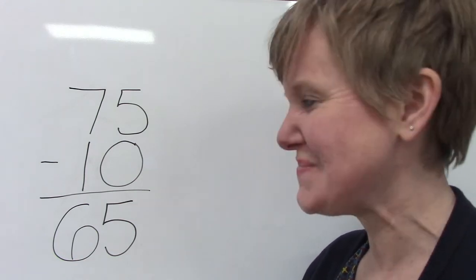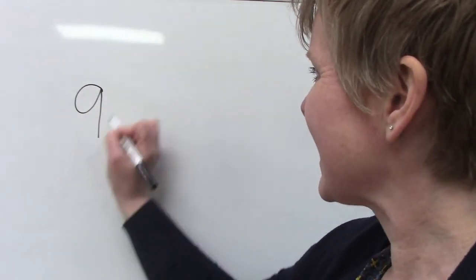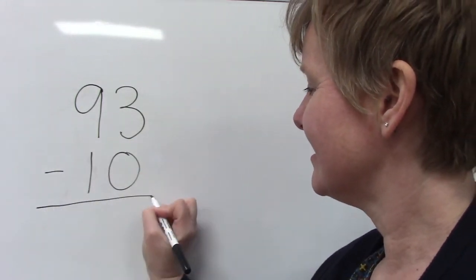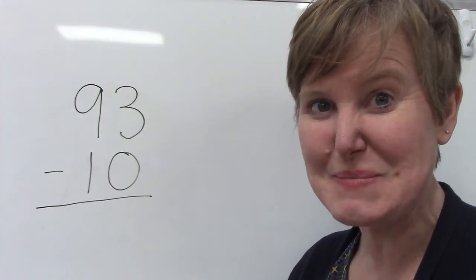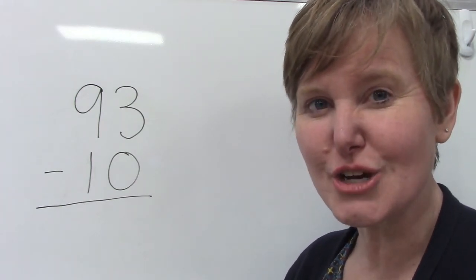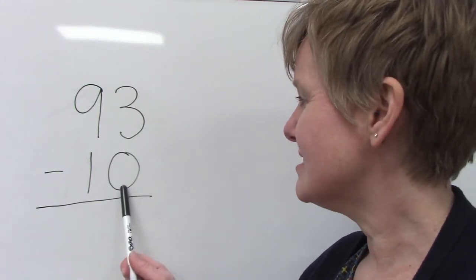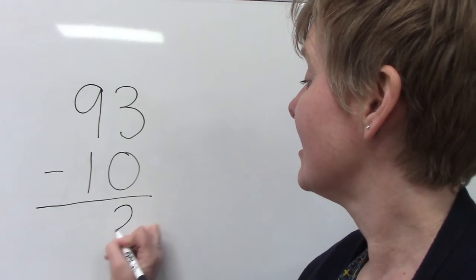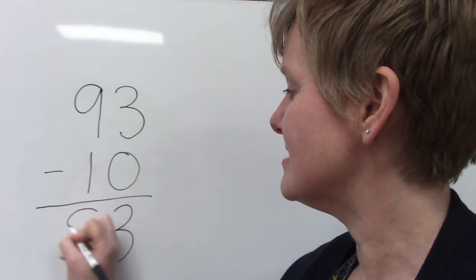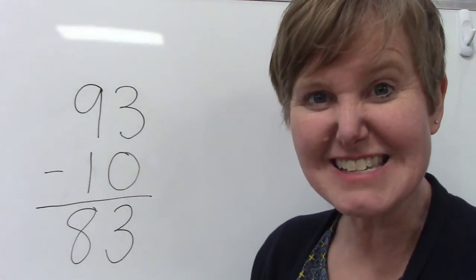Good job. I think that we should try another big number because you did great with that one. Let's try something in the 90s. 93 take away 10. Maybe you already know because you know how to count by tens backwards. Let's just look at our ones place — 3 take away 0, we're not going to take anything away, it's 3. And 9 take away 1 is 8. 93 take away 10 is 83.